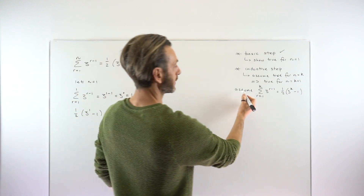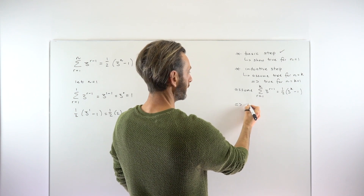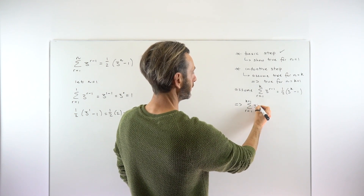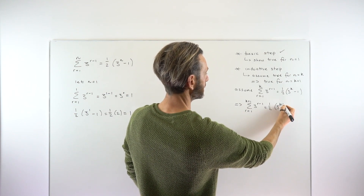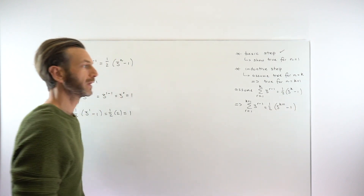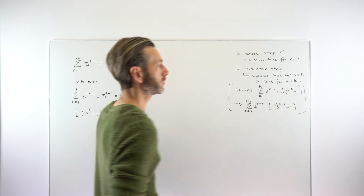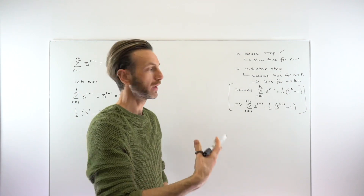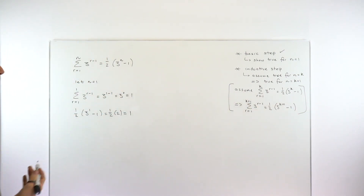What we want to show is that if that assumption is true, it implies that the sum from r equals 1 to k plus 1 of 3 to the r minus 1 equals one half times (3 to the k plus 1 minus 1). This gives us a target and reminds us that we'll need to use the assumption at some point — otherwise we're not actually using proof by induction.